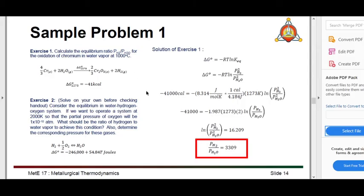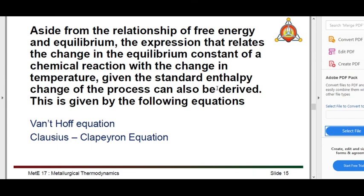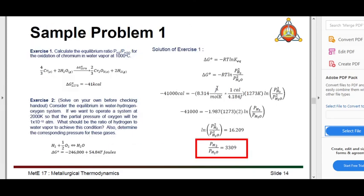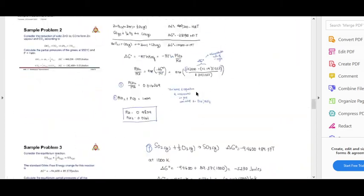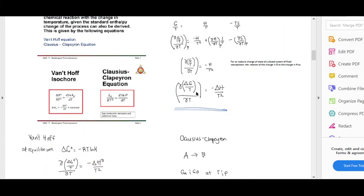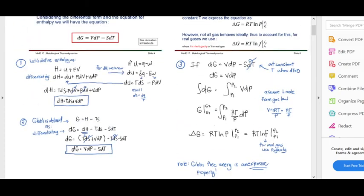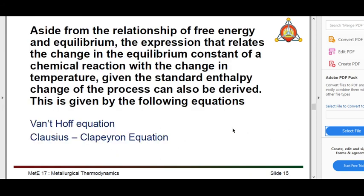For summative assessment number 2, if given this type of problem, use the equations rather than the Ellingham diagram. Handouts in the module show other sample problems. There are many ways to formulate problems involving delta G and delta G-naught - check the handouts to see how they are used.